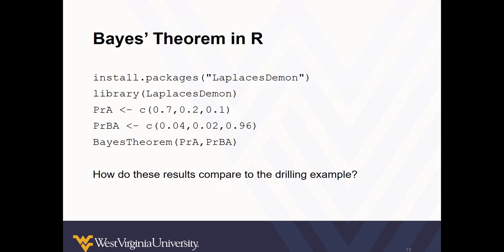You can also use R to calculate Bayes' Theorem outputs so you don't have to walk through all those equations manually. It's not uncommon to run into issues with typos or getting confused about what is conditional on what. If you copy these five lines of code into RStudio, compare the results with what we calculated by hand using the slide deck, and think about how they relate to the drilling example. Dig into Bayes' Theorem — I think you're going to make some really cool discoveries. Catch you next time.